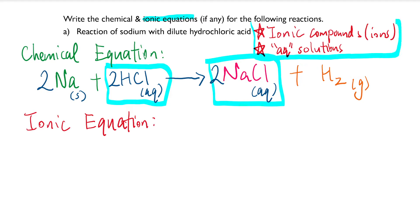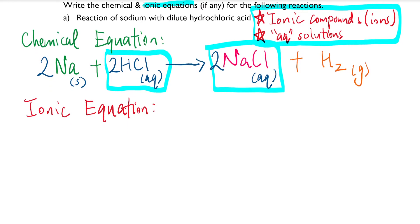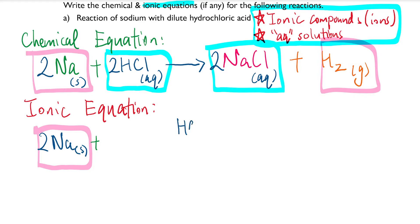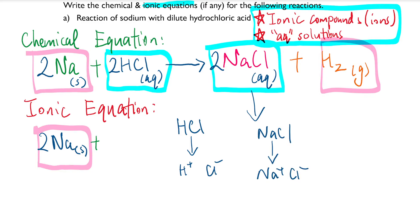Ionic equations deal with this. Remember I said the chemical equation shows you the whole story? The ionic equation tells you specifically what's happening in that story. For anything that's solid, liquid, or gas, leave it as it is. But for HCl, you're going to separate it into its ions. We know HCl gives H⁺ and Cl⁻ ions. For NaCl, that's Na⁺ and Cl⁻ ions — that's what you need to show.